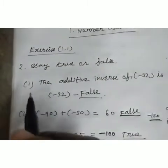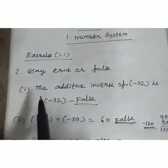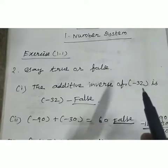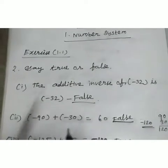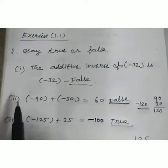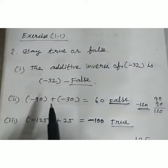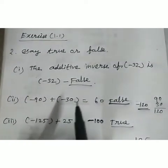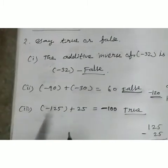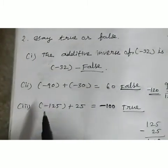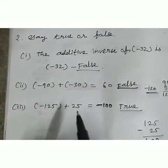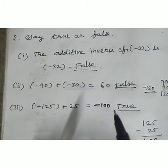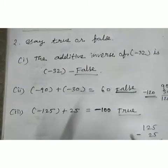So for the three questions: the additive inverse of minus 32 is minus 32 — false. Minus 90 plus minus 30 equals 60 — false. Minus 125 plus 25 equals minus 100 — true.